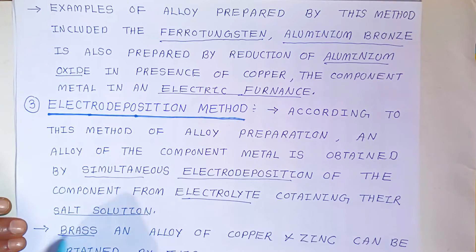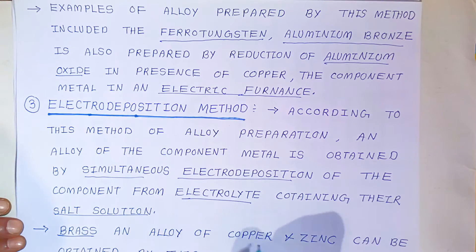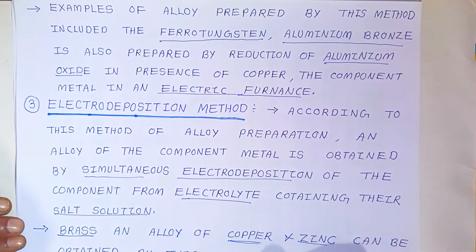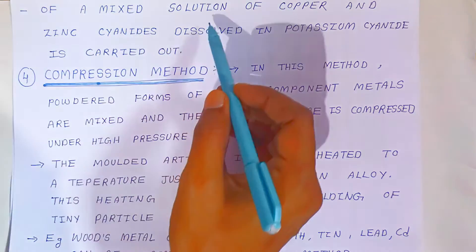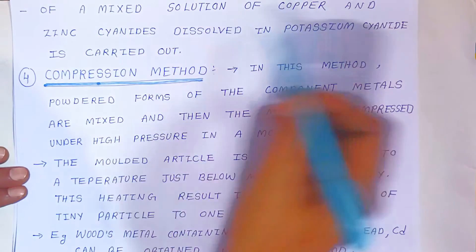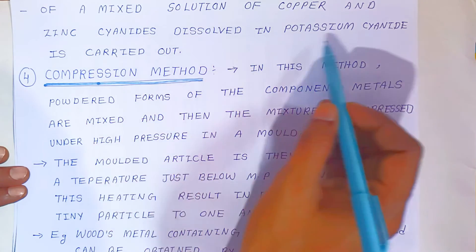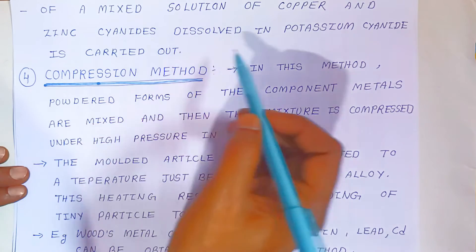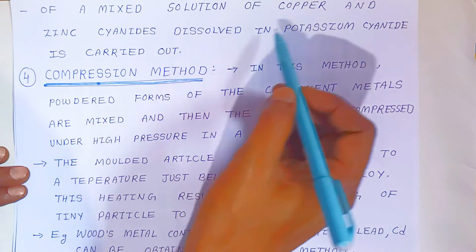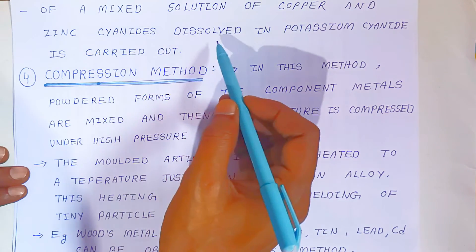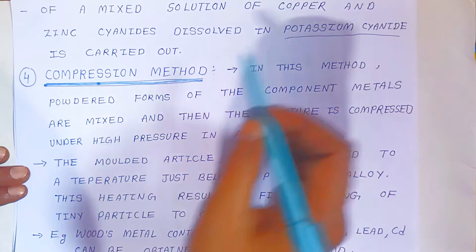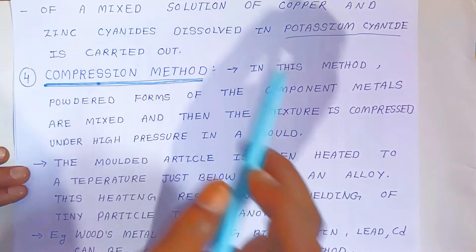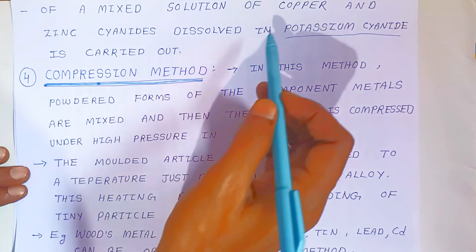For example, brass — an alloy of copper and zinc — can be obtained by this method. When electrolysis of a mixed solution of copper and zinc cyanide dissolved in potassium cyanide is carried out, copper and zinc are deposited together to form brass at one of the electrodes.